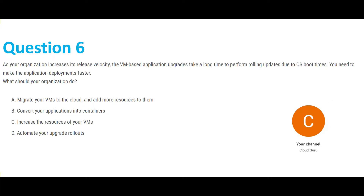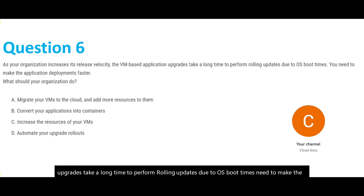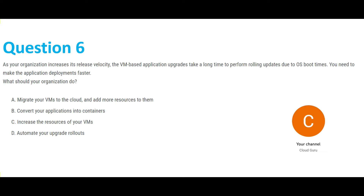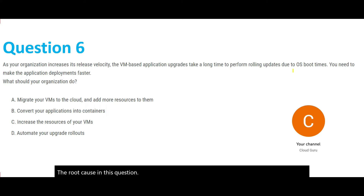Question 6: As your organization increases its release velocity, the VM-based application upgrades take a long time to perform rolling updates due to OS boot times. You need to make the application deployments faster. What should your organization do? This question is a problem-and-solution type. The root cause is the OS boot times.